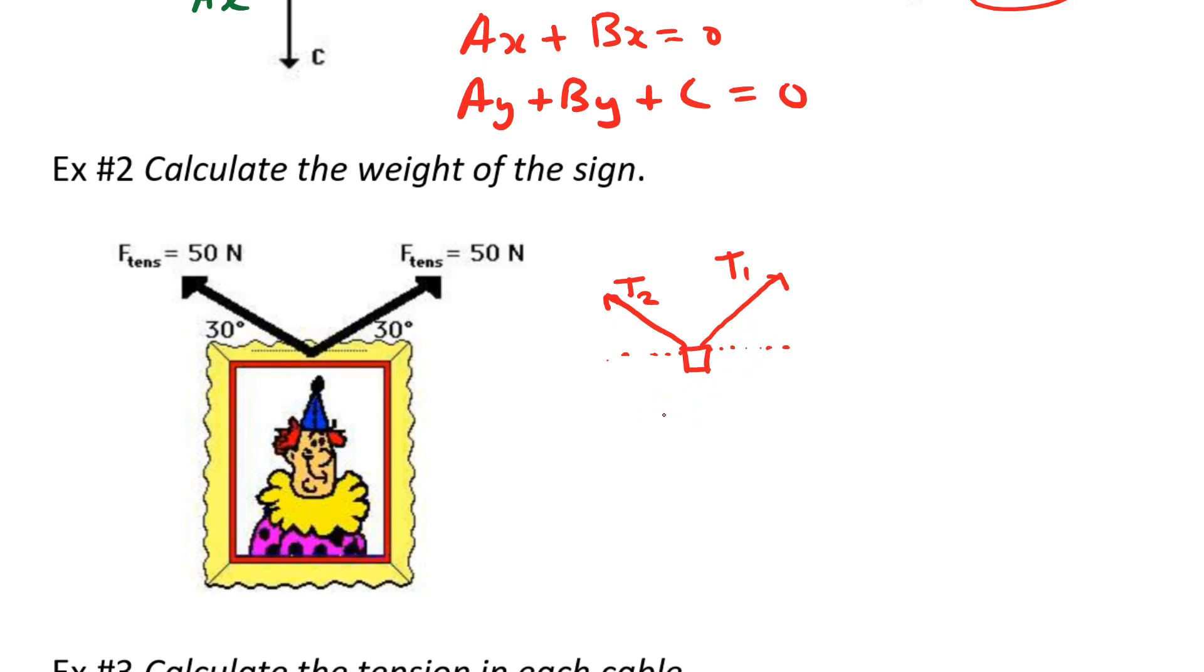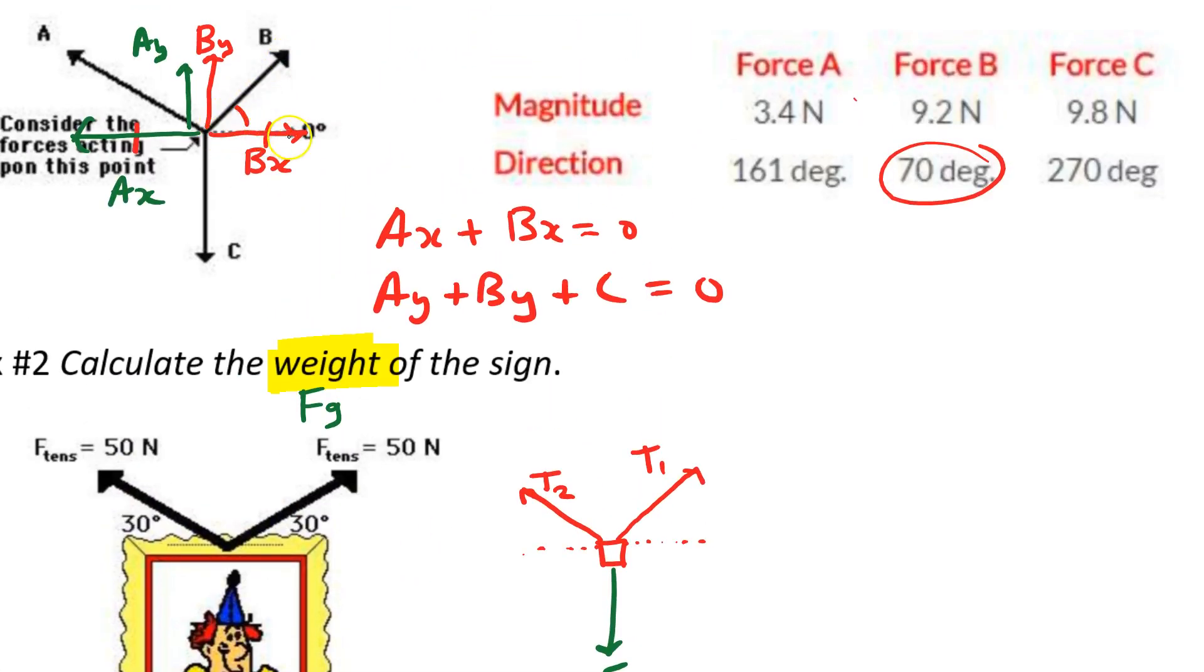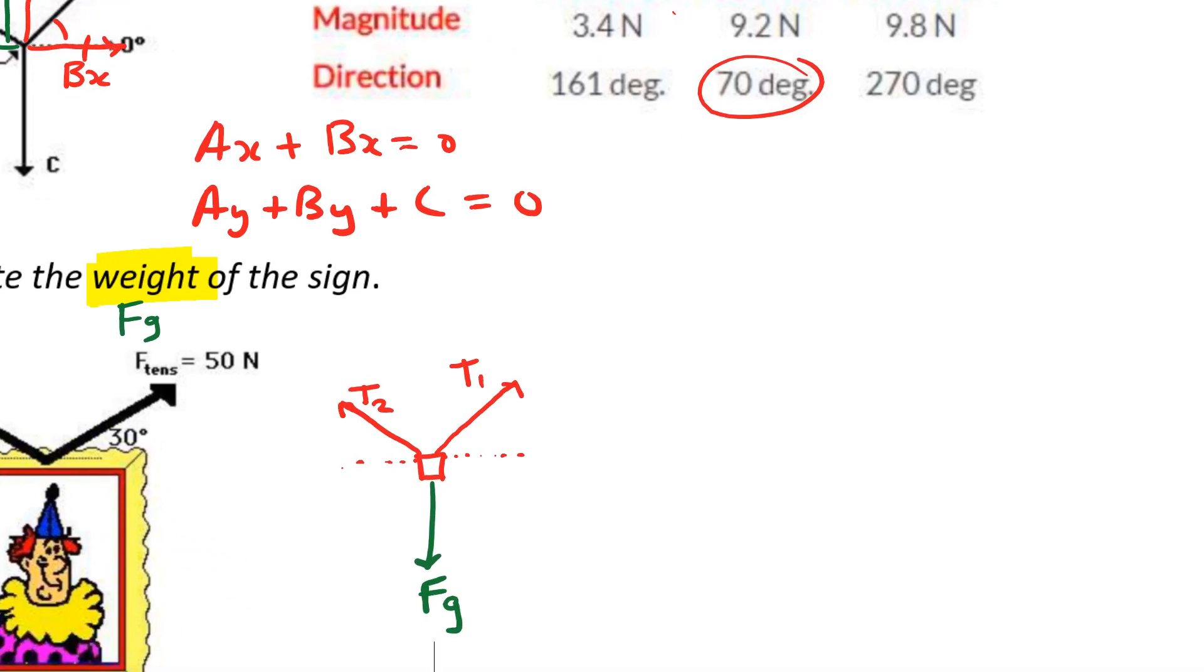Is there a force that we're missing? Well, it says calculate the weight of the sign. What is weight? Weight is actually the force of gravity, right? So that is another force that we're going to draw. So that's the downwards force, the force of gravity. Just like in our previous example, I'm going to, instead of looking at the original lines, I'm going to look at the x component and the y component. So I'm going to replace T1 with T1x and T1y. Similarly, I'll be replacing this one with T2x and T2y.